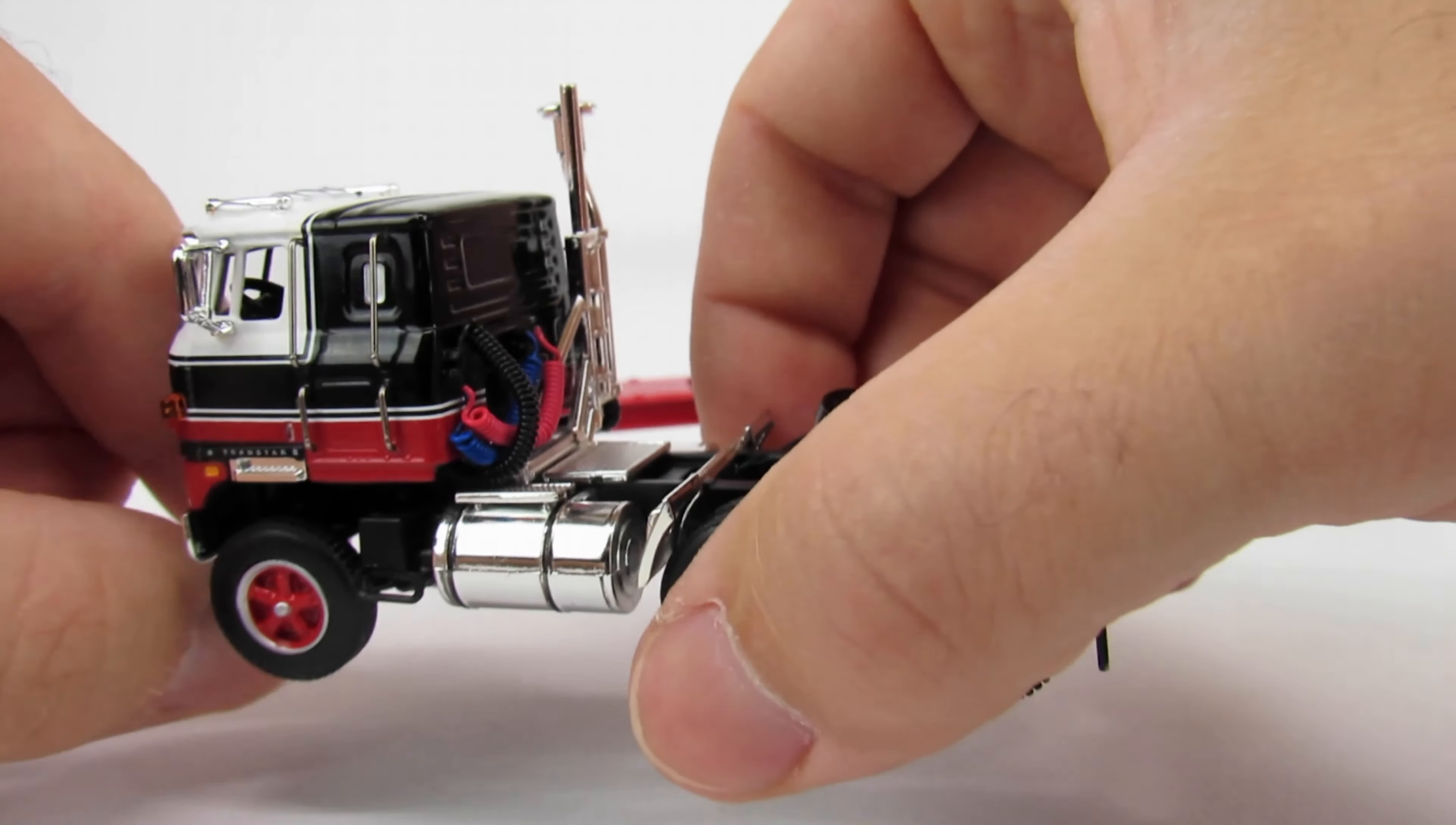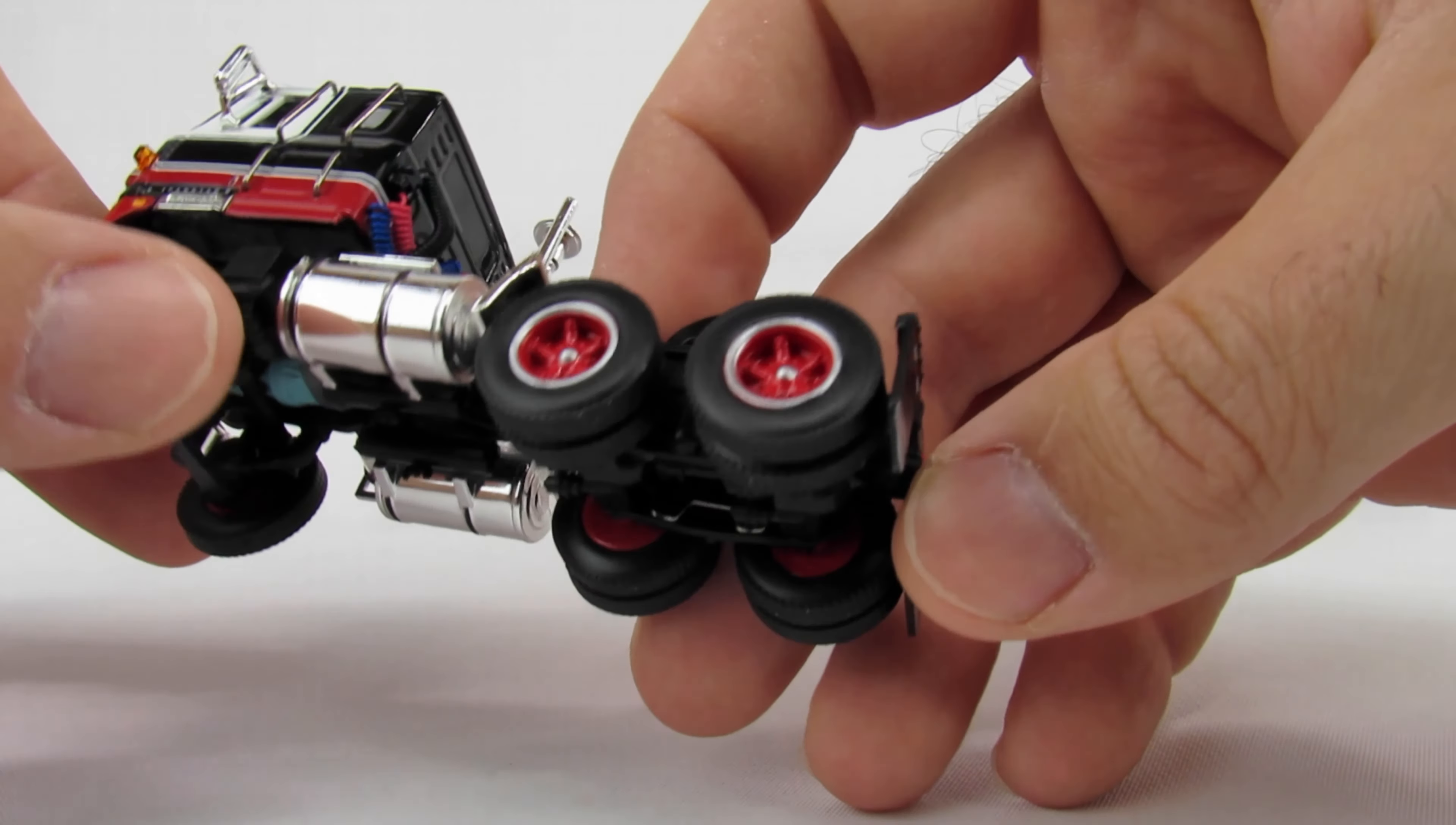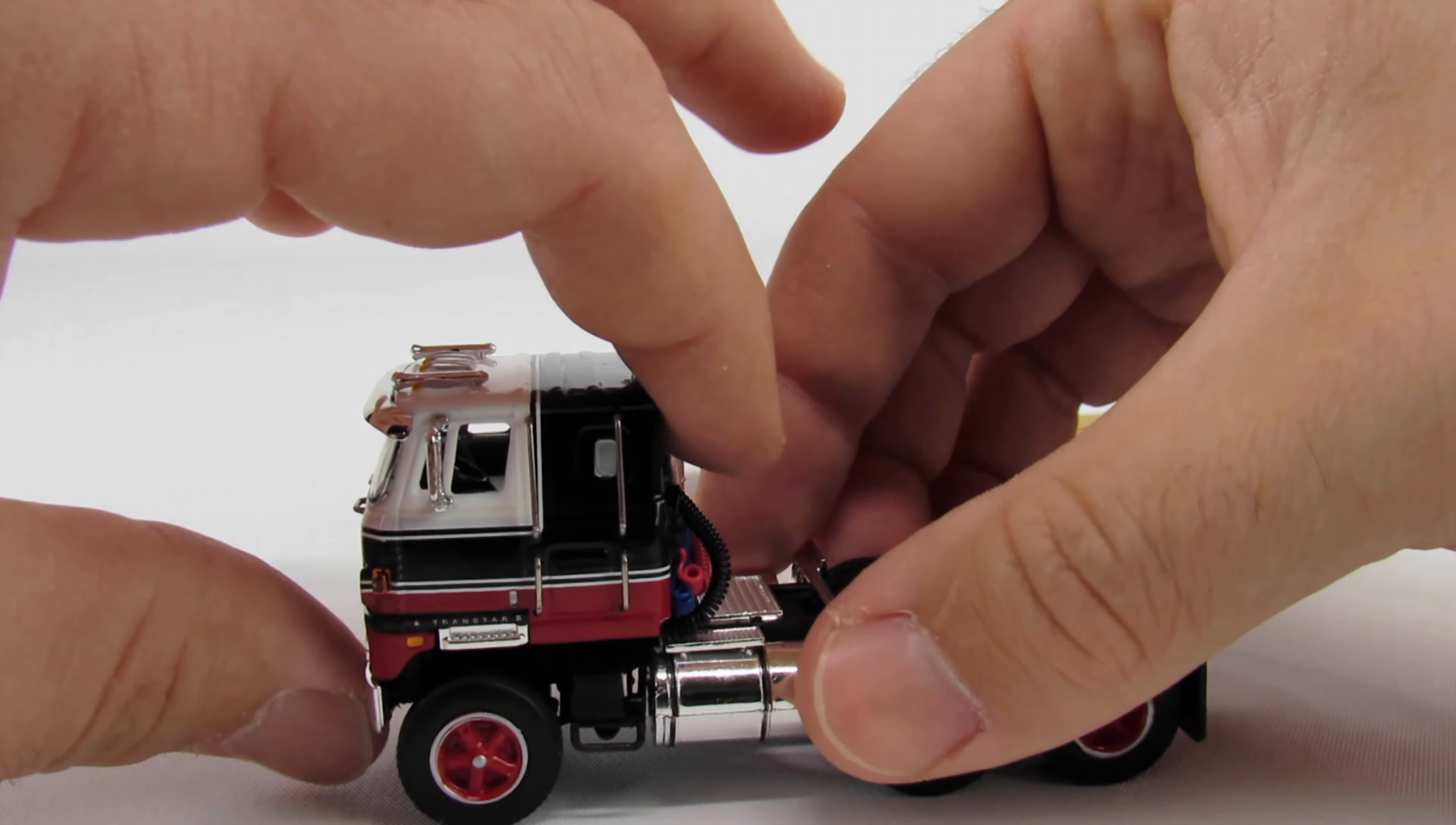Around the back side you have your airlines and electric line, which is pretty cool. You've got mudflaps with the old silver tips which is nice. If you look underneath, everything's there that should be there.